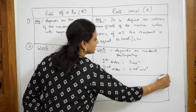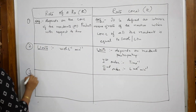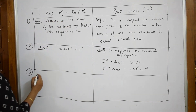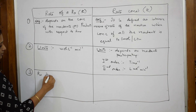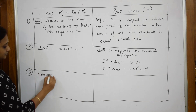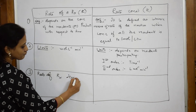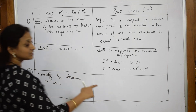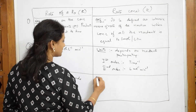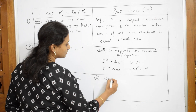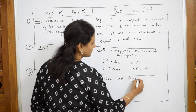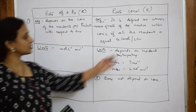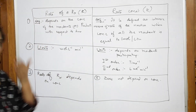Now, third difference. When I speak about rate of a reaction, what is it depending upon? It is depending upon concentration. So, rate of reaction depends on concentration. But rate constant — does this depend on concentration? No. That is the most important — rate constant does not depend on concentration. We introduce it only when the concentration is reaching one mole per liter.